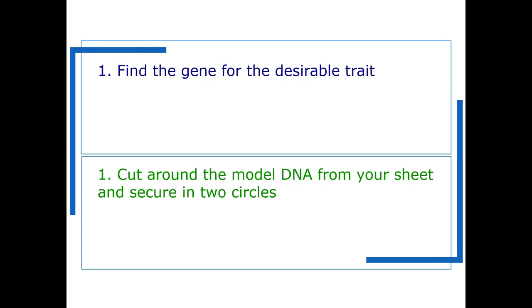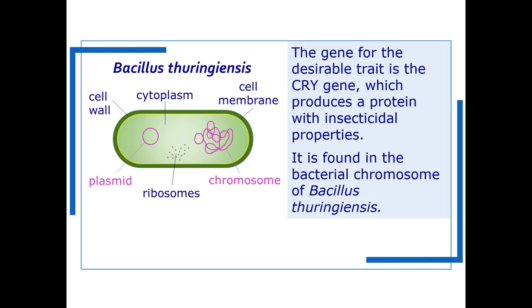So the first step is to find the gene for the desirable trait and the desirable trait that we're going to work with is an insecticidal protein produced by the cry gene which is found in the bacterial chromosome of Bacillus thuringiensis.